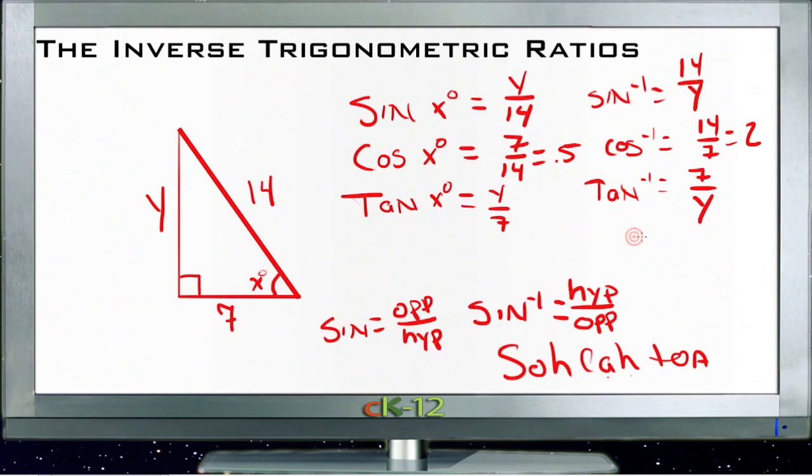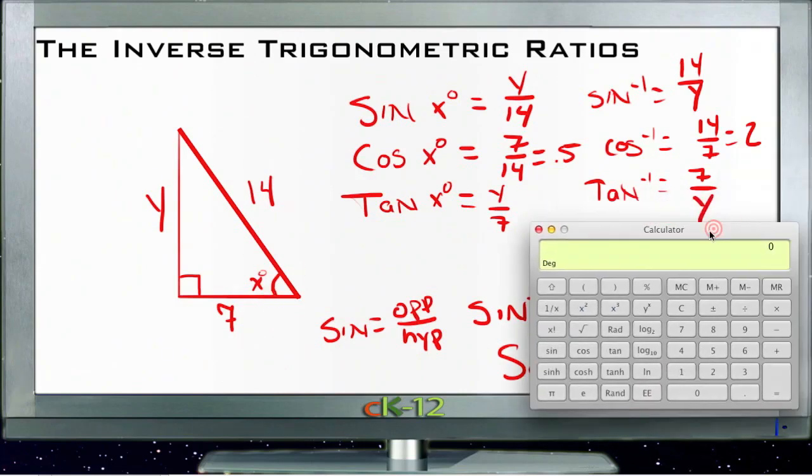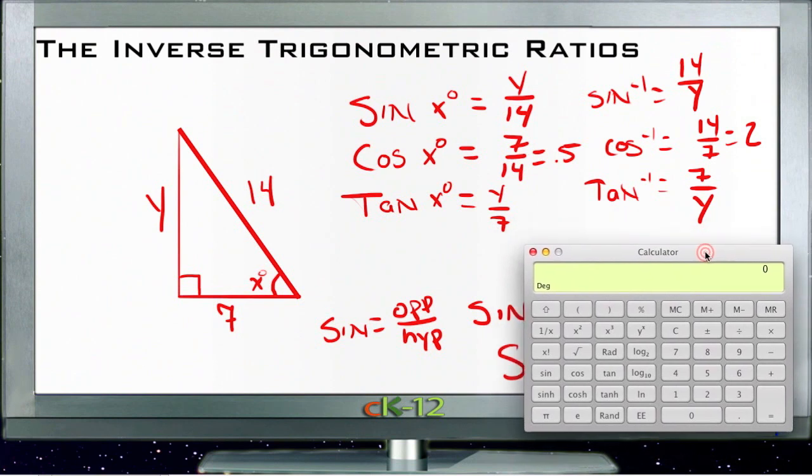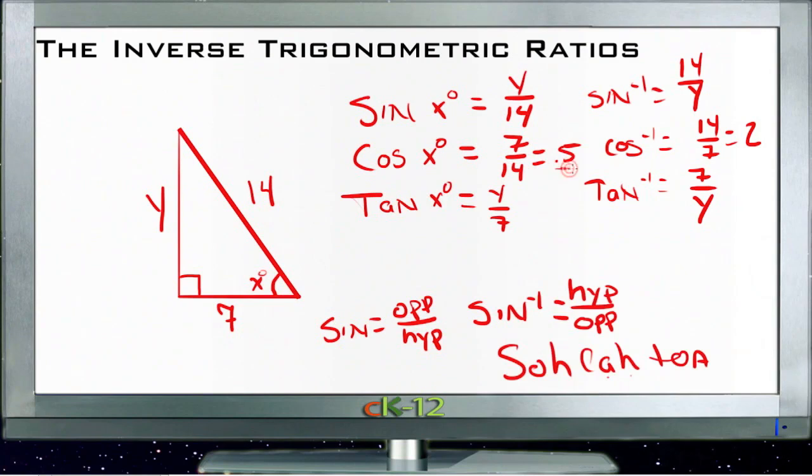But the reason we want to use these is when you are looking for a specific angle measure, the inverse sine is what you need to be able to type into a calculator. For instance, we just discovered here that the cosine of our X degrees is 0.5. But that doesn't tell us what the degree is. It just tells us what the cosine is. So we have to look it up on a table to find out what angle goes with 0.5.